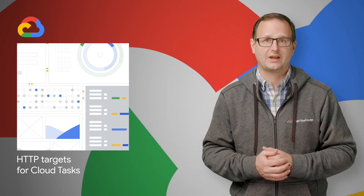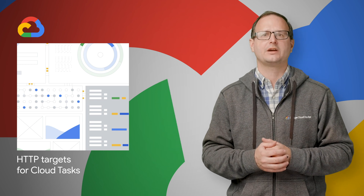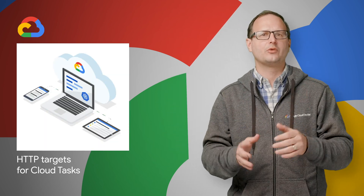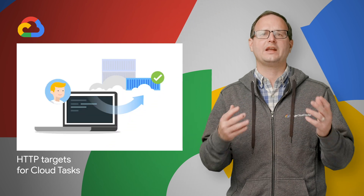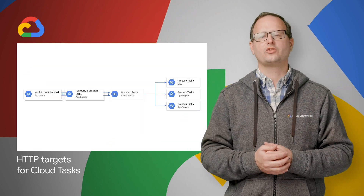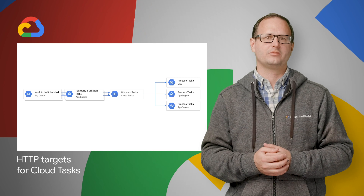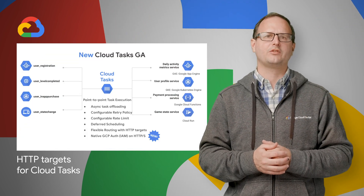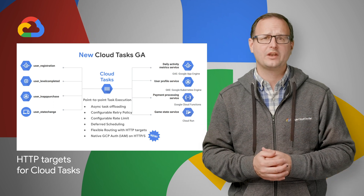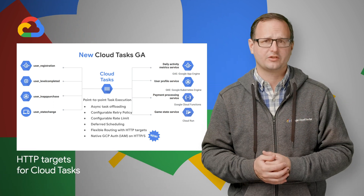Cloud Tasks, a fully managed asynchronous task execution service, now includes new HTTP targets in beta that securely reach Google Kubernetes Engine, Compute Engine, Cloud Run, and on-prem systems using industry standard OAuth OpenID Connect authentication. With Cloud Tasks, you can offload long running and background activities, decouple services from one another, and make your applications much more resilient to failures.